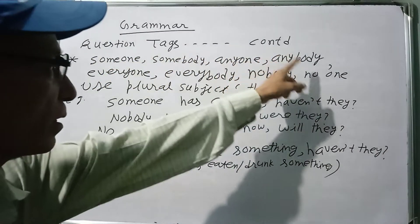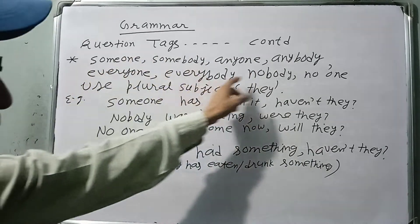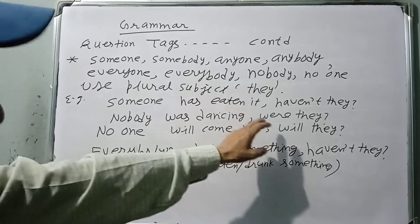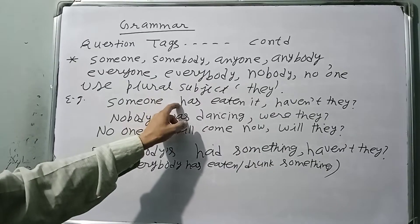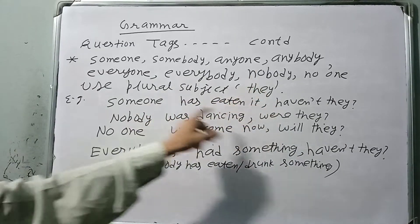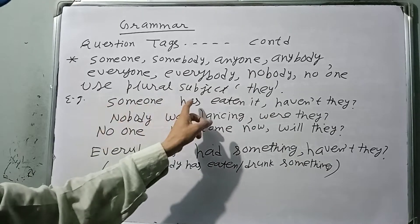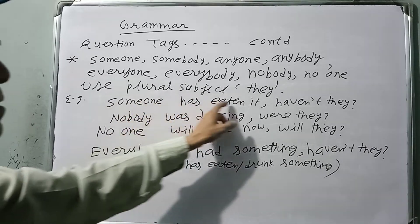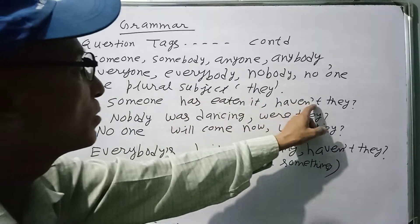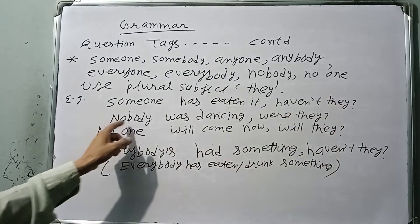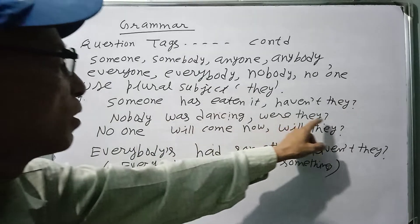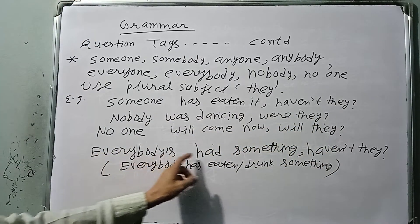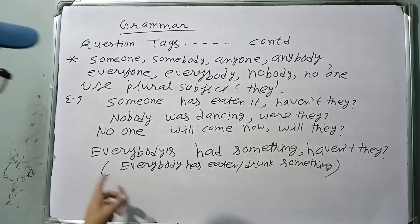To summarize: someone, somebody, anyone, anybody, everyone, everybody, no one, nobody — all use a plural verb meaning 'they' as the subject. According to the sentence, for example: 'Someone has written it' — has changes to 'have they.' 'Nobody was dancing' — 'were they.' 'No one will come now' — 'will they.' 'Everybody had something' — 'hadn't they.'